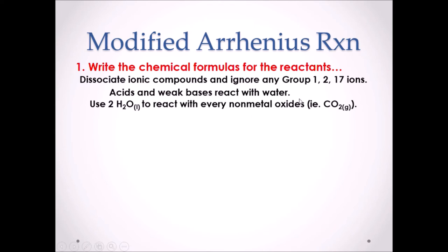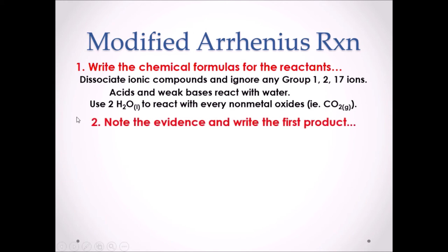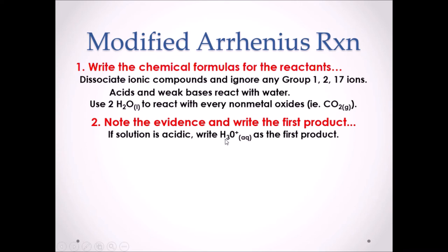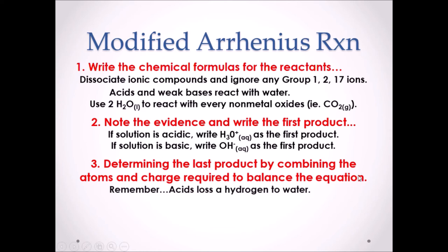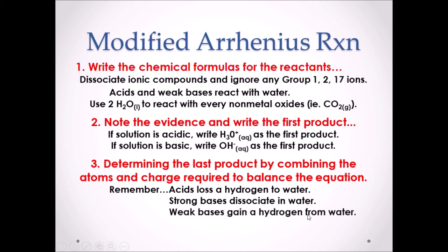On the rare occasion, use two moles of H2O to react with every nonmetal oxide — for example, CO2. Step 2: Note the evidence and write the first product. If the solution is acidic, the first product will be H3O+; if basic, the first product will be OH−. Step 3: Determine the last product by combining the atoms and charge required to balance the equation. Remember: acids lose a hydrogen to water, strong bases just dissociate in water, and weak bases gain a hydrogen from water.